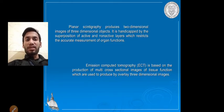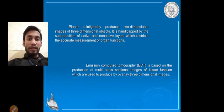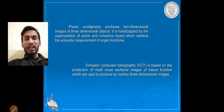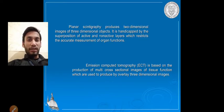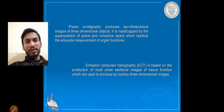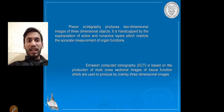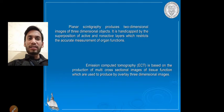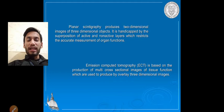Our body is a three-dimensional object. When we try to diagnose it using planar imaging, there is a problem of superposition of active and non-active layers, which restricts accurate measurement of organ functions. There are two layers formed — one active layer and one non-active layer.